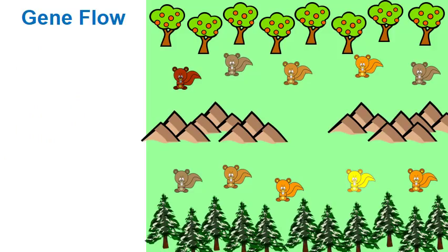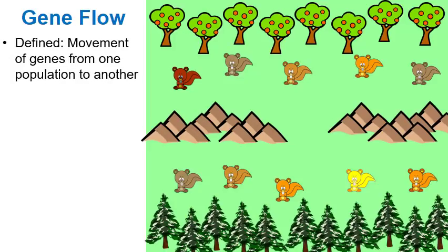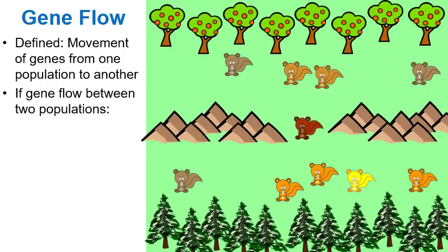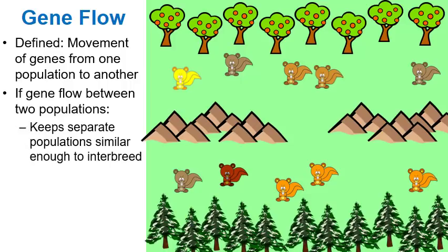Another topic is gene flow — the movement of genes from one population to another. We have two populations of squirrels: the squirrels on top mainly reproducing with those on top, and the squirrels on the bottom mainly reproducing with those on the bottom. But there's a gap in the mountainous terrain, and every now and then a squirrel from the bottom migrates to the top and vice versa. This is gene flow, and this little bit of mixing is what will keep the populations similar enough in their DNA that they can keep breeding generation after generation and would likely stay one single species.